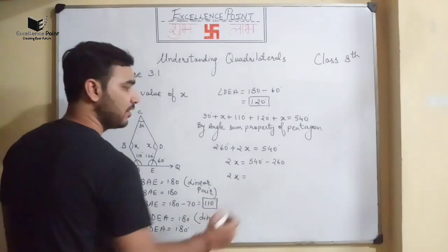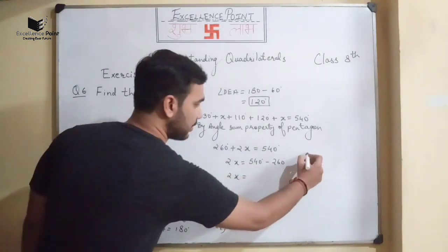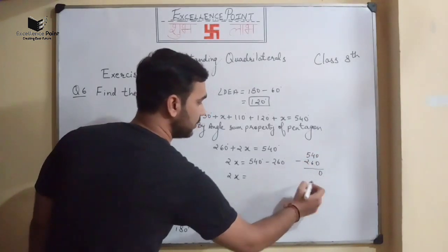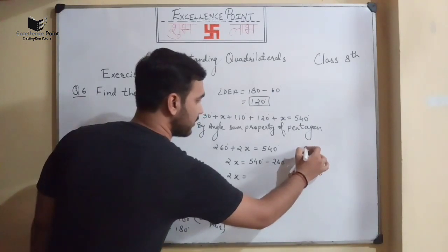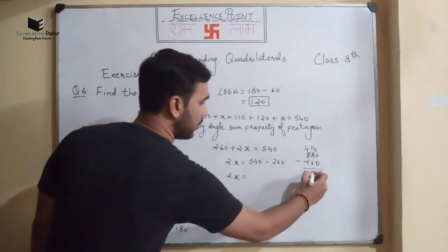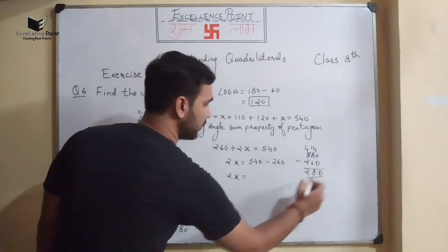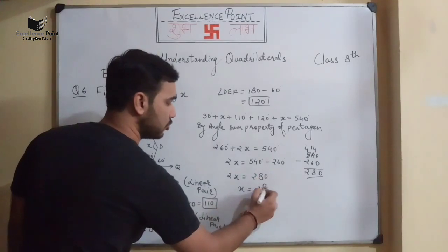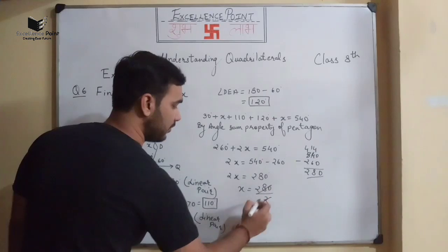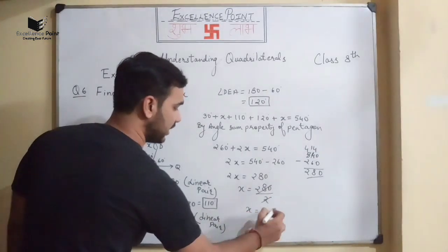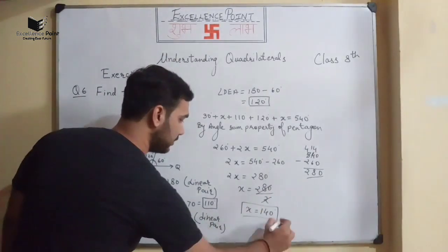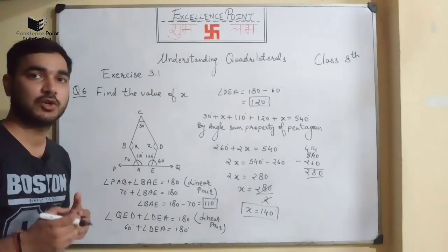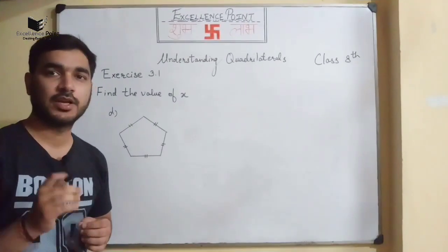Subtracting: x = 540 − 260 = 280. Wait — since there are two x values: 2x = 280, so x = 280 ÷ 2 = 140°. So x = 140°. I hope the question is clear.